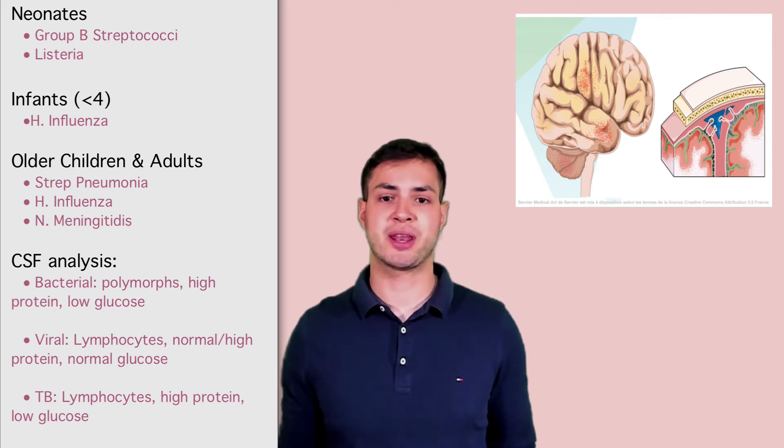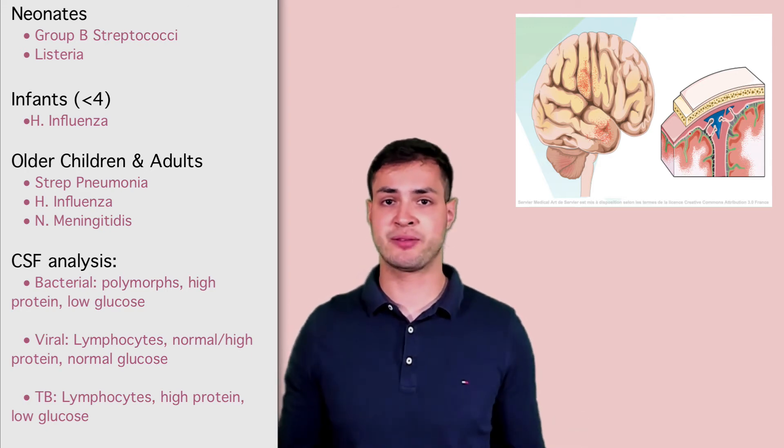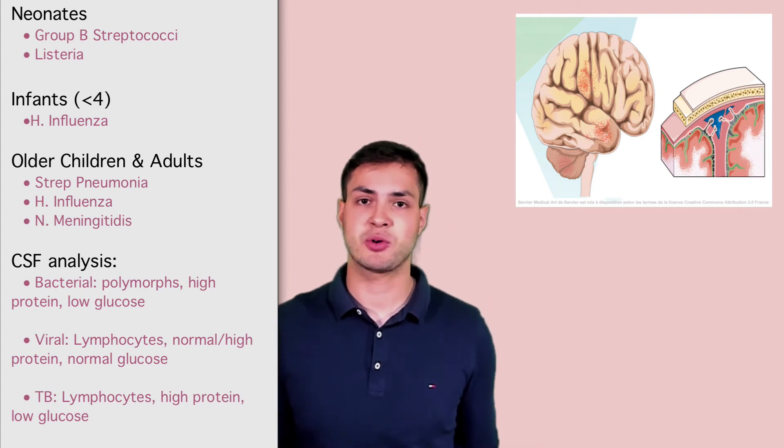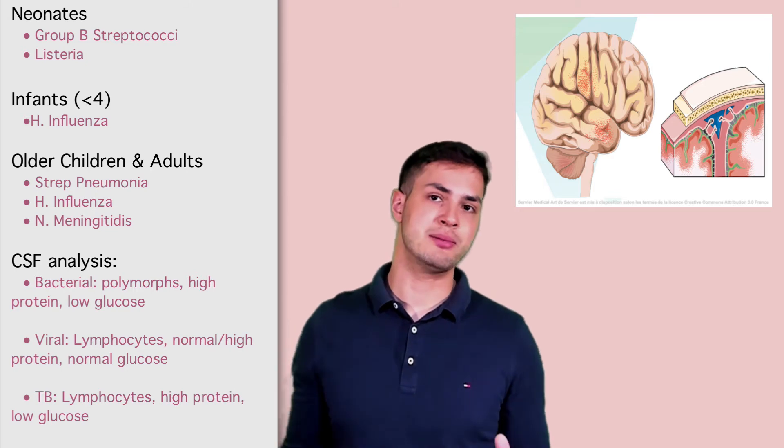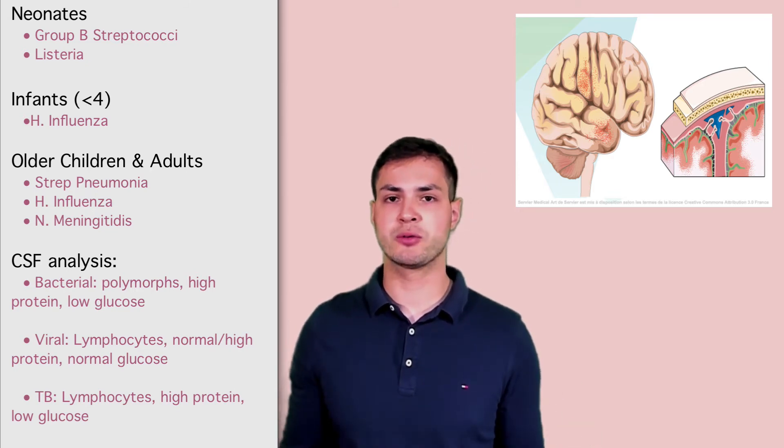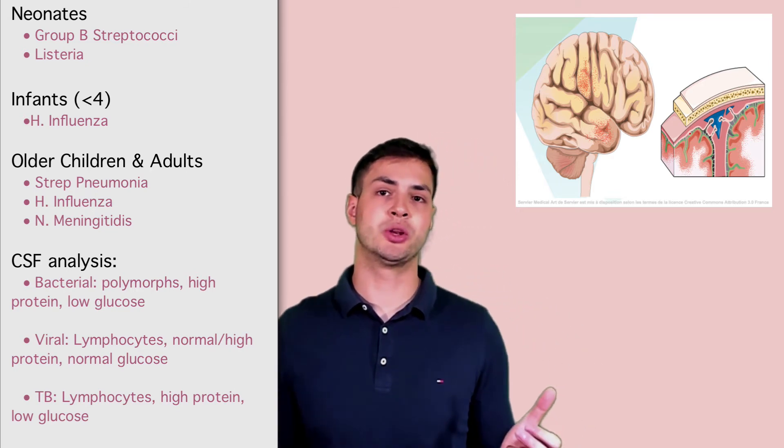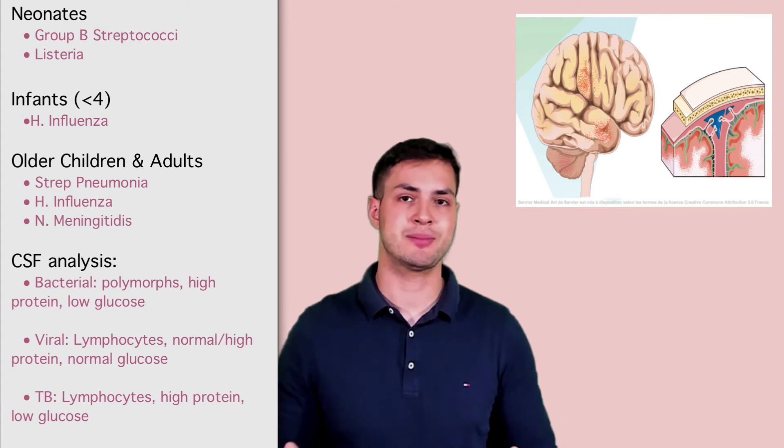What you do is a lumbar puncture and a lumbar puncture tells you the analysis of different things. A typical exam question will be a three-stem question and it would ask you, is this viral, bacterial or TB? So what do we look for? We look for protein, we look for glucose and we look for what type of cell they are.